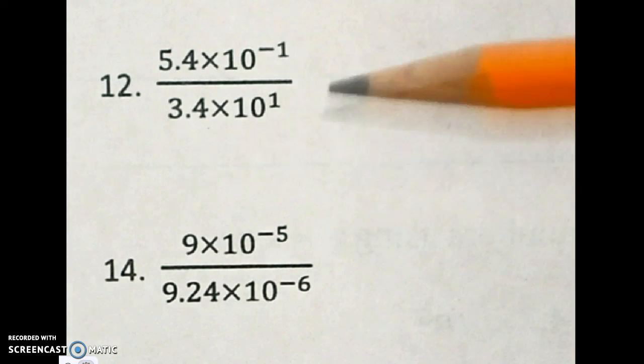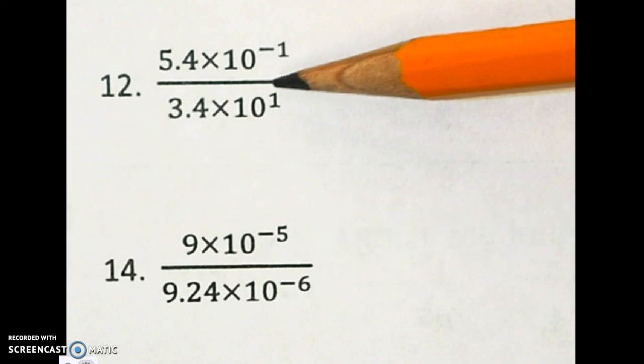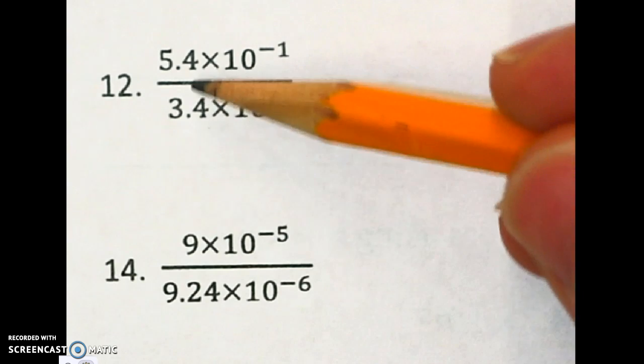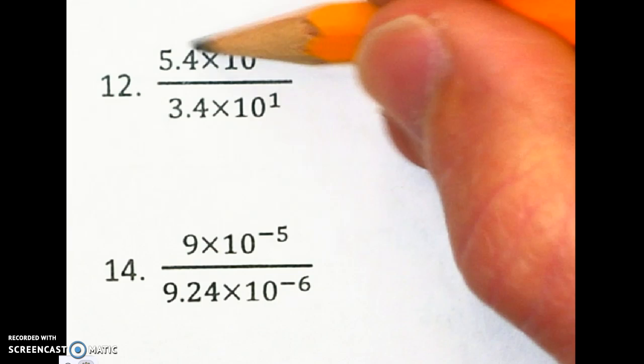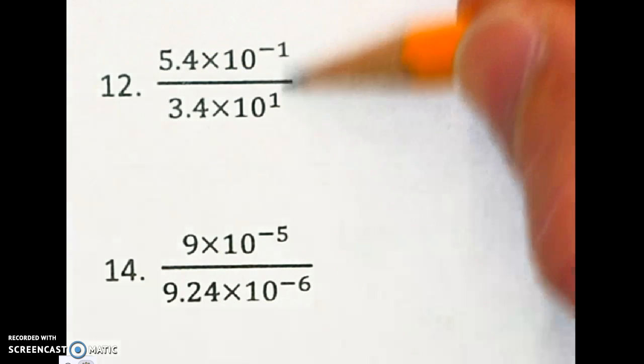All right, this is Southwest 212. We're going to be dividing numbers in scientific notation. The first part of this is pretty simple. All you do is divide the numbers and subtract the powers.